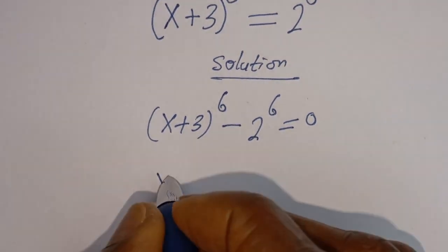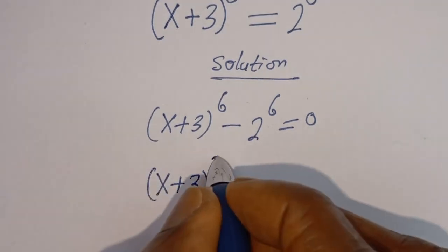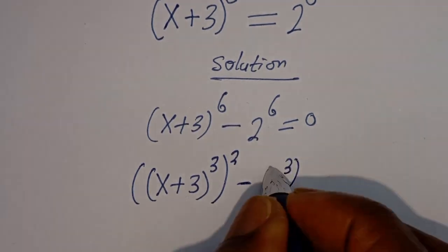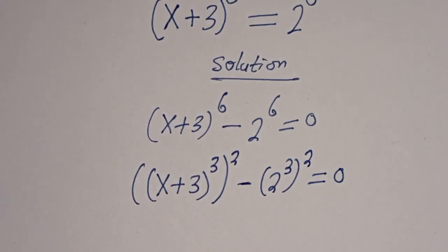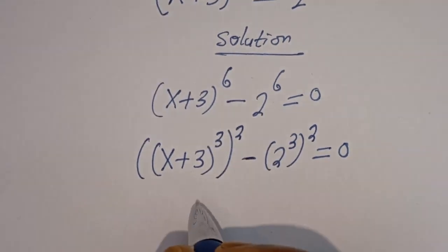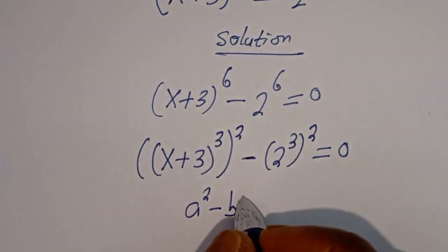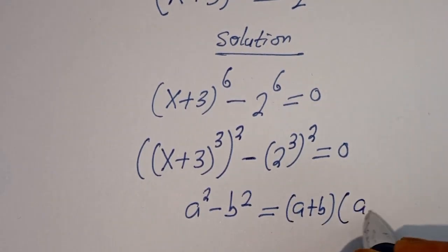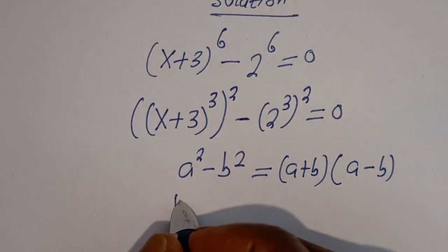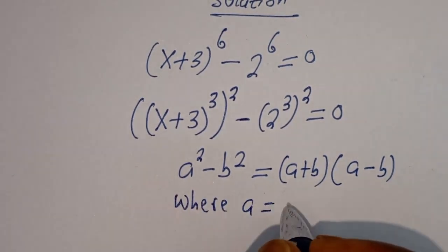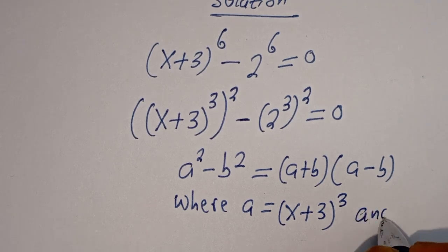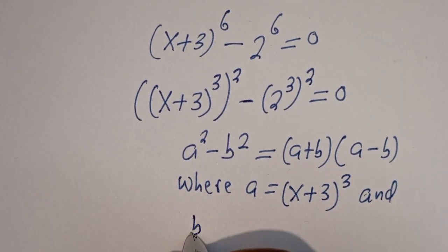Then this can be written as x plus 3 to the power of 3, squared, minus 2 to the power of 3, squared, is equal to 0. This is in the form of a perfect square — that is, if you have a squared minus b squared, this is equal to a plus b, bracket, a minus b. Here a is equal to x plus 3 to the power of 3, and b is equal to 2 to the power of 3.